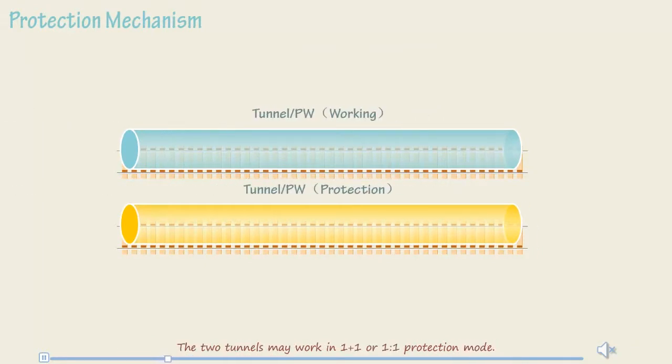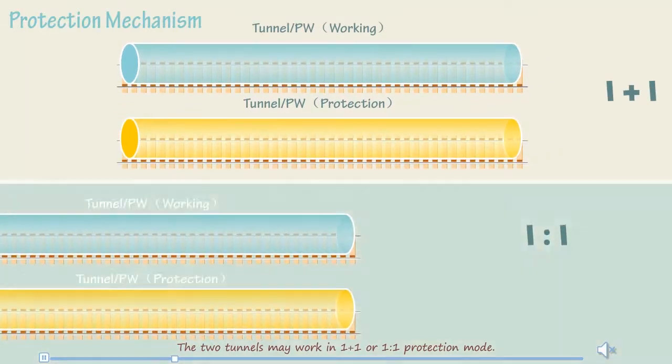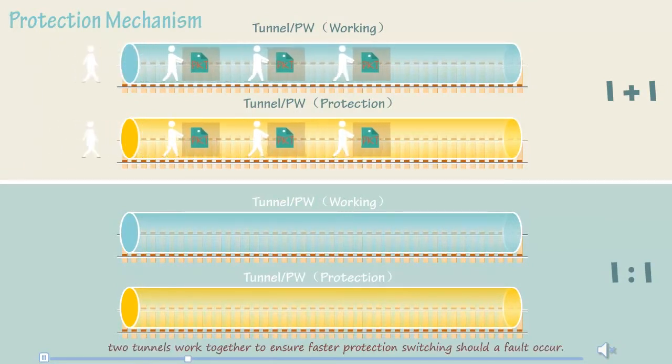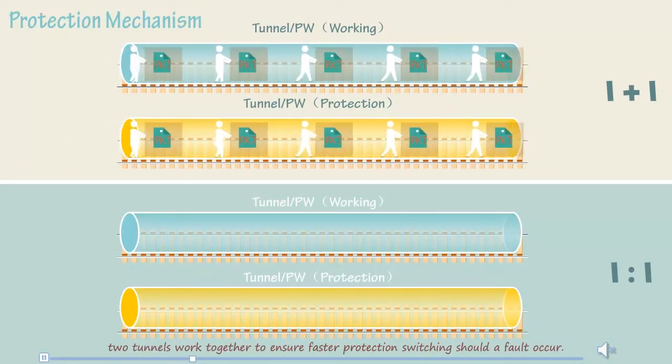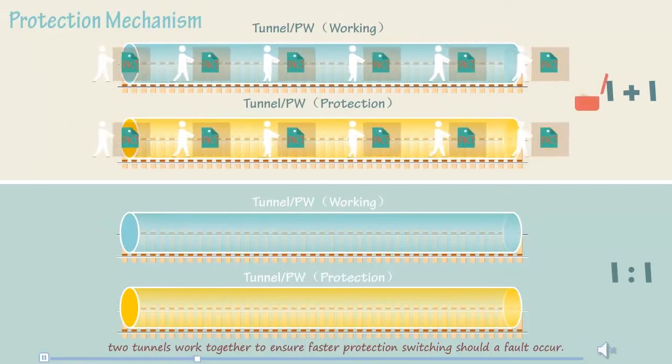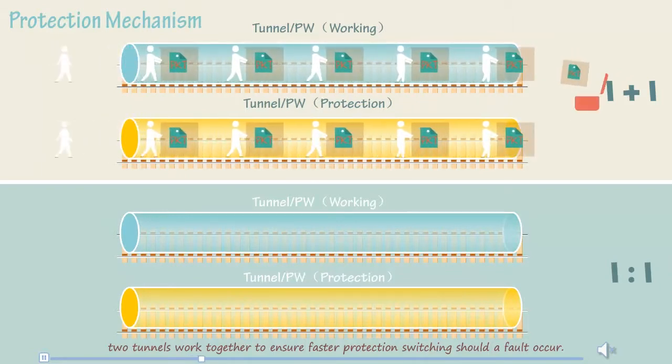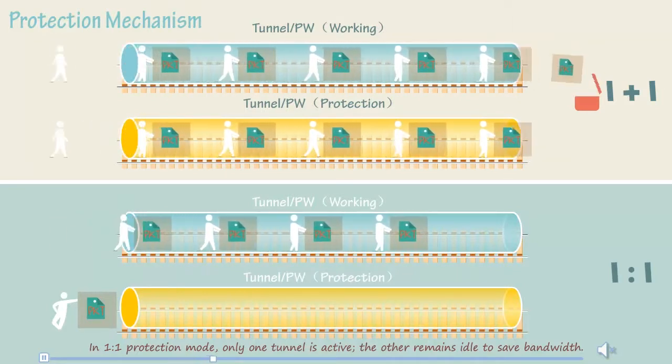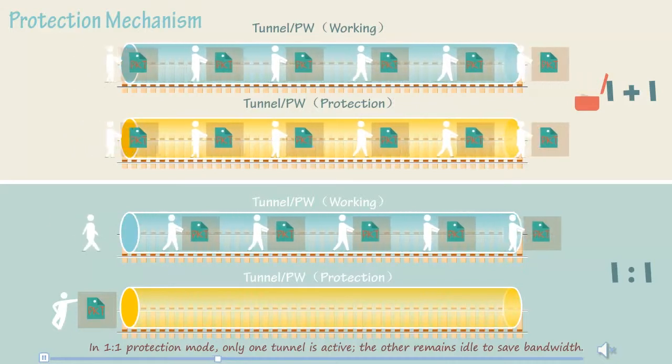The two tunnels may work in 1 plus 1 or 1 by 1 protection mode. In 1 plus 1 protection mode, two tunnels work together to ensure faster protection switching should a fault occur. In 1 by 1 protection mode, only one tunnel is active. The other remains idle to save bandwidth.